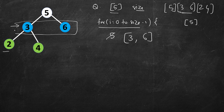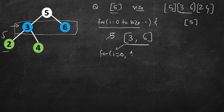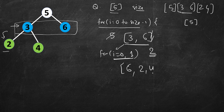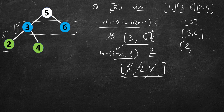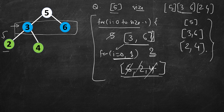After popping 5 and pushing its left child 3 and right child 6, we move to the next level. The queue size is now 2, meaning 2 nodes were in the previous level, so the loop runs twice. We pop 3, push its children 2 and 4 into the queue, then pop 6 (which has no children). We collect 3 and 6 into a new list. At the last level, we pop 2 and 4 — neither has children — so the queue becomes empty and we return the result: [5], [3,6], [2,4].